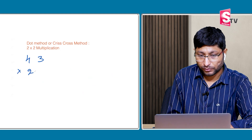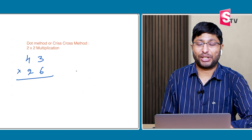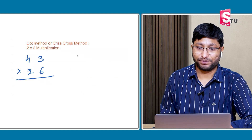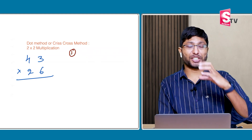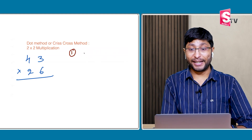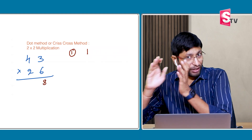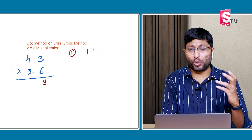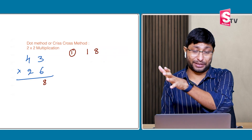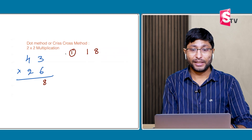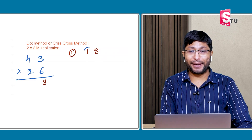43 × 26. Step 1: units place into units place. 3 × 6 = 18. I'm just explaining so you understand — normally you wouldn't write the step number. Write down the 8; 1 will be carry.